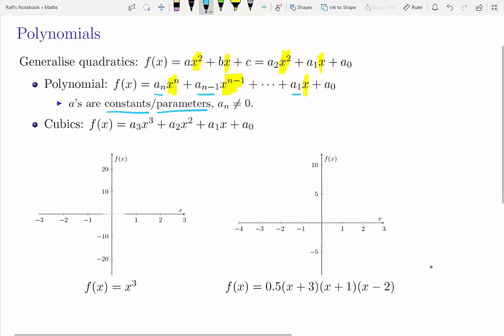All these terms here are constants or parameters, and we give them names a1 to an. The leading term, to the highest power of x, is going to be unequal to 0. Otherwise, that term would fall away and we would have a polynomial of order n minus 1, not n.